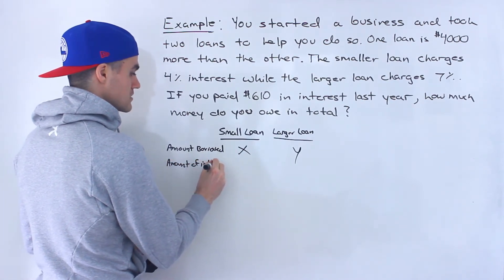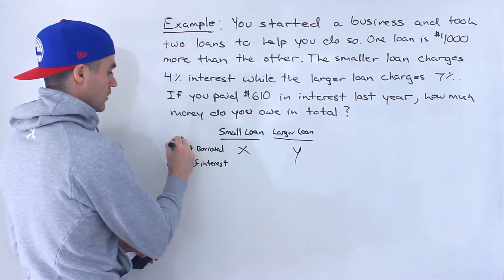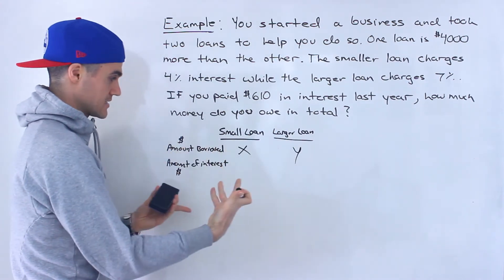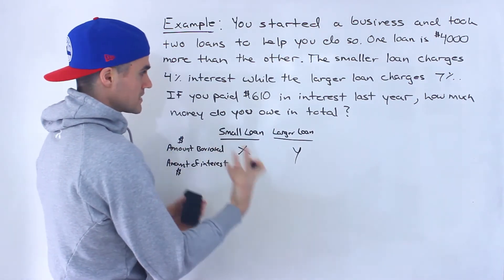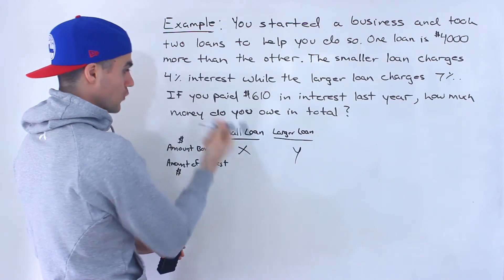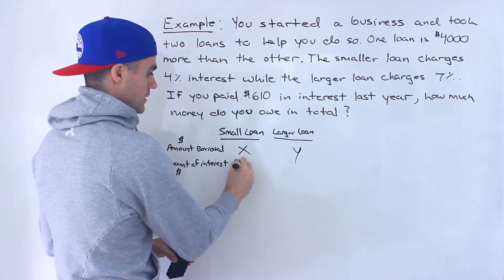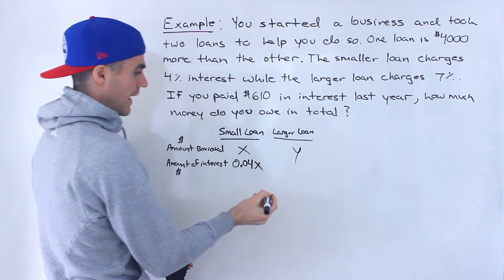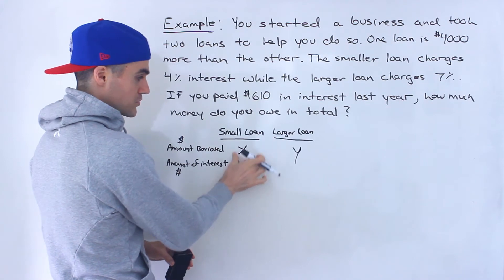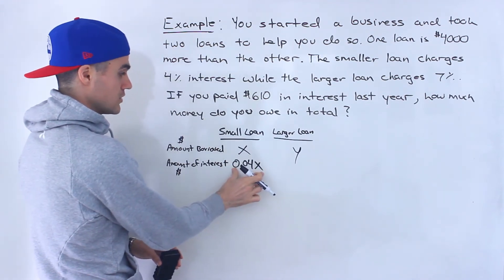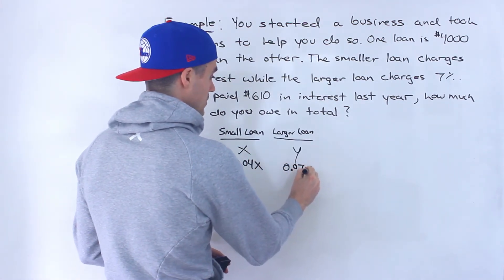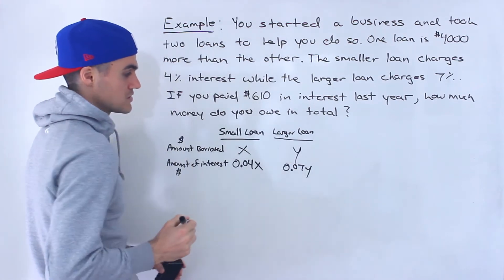Notice that we're also told the interest rate for both of these. So what we can say is the amount of interest paid. Both of these rows are in dollar terms — the amount borrowed is in dollars, and the amount of interest is in dollars as well. The small loan charges 4% interest, so the amount of interest would be 0.04X. We take the amount borrowed, multiply it by 0.04, and that gives us 4% of that amount — the interest in dollar terms for the small loan. Then the larger loan at 7%, the amount of interest we pay would be 0.07Y.